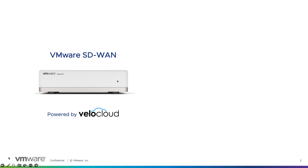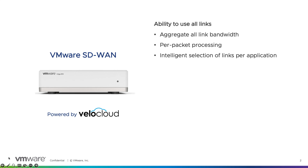When you start thinking about VMware SD-WAN, one of the things that people ask is what makes it different. Where VeloCloud was a little different was that we did want to have the ability to use all links, but then we also can make a per-packet decision.